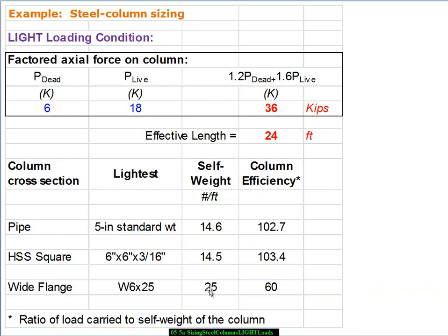All right, so I put a W6 by 25. By the definition of this nomenclature, this is a 6 inch deep beam. It weighs 25 pounds per foot. So I'm going to put 25 right there, and then we're going to calculate 36,000 pounds divided by the weight of this column, which is 25 pounds per foot times 24 feet.